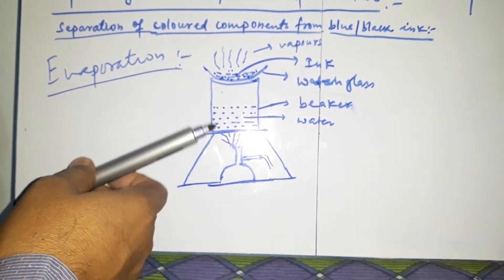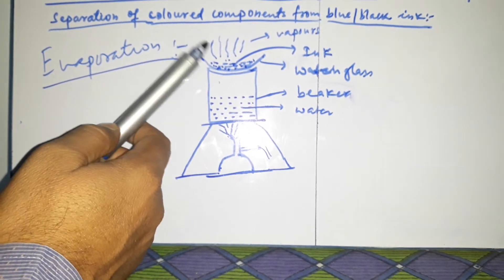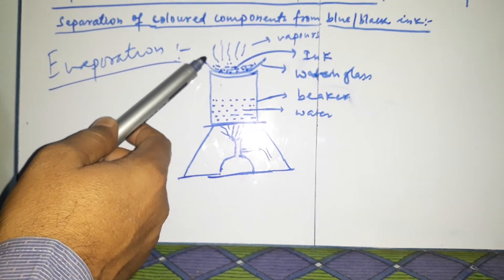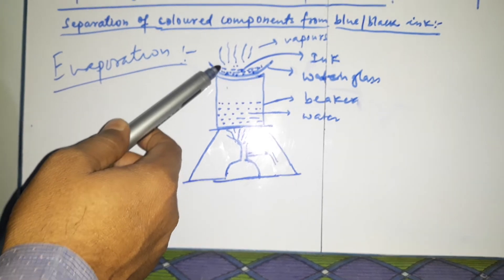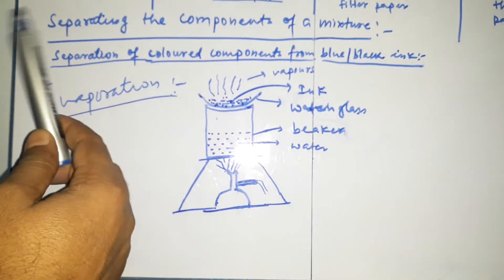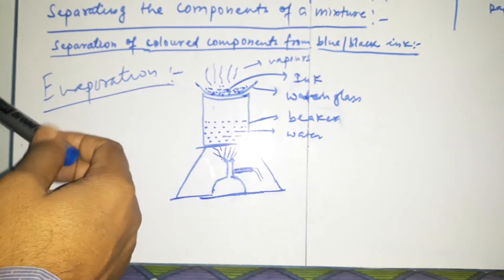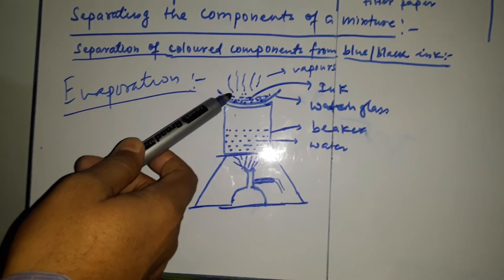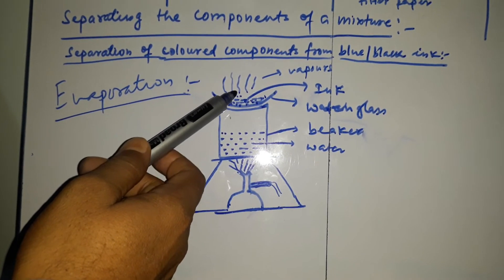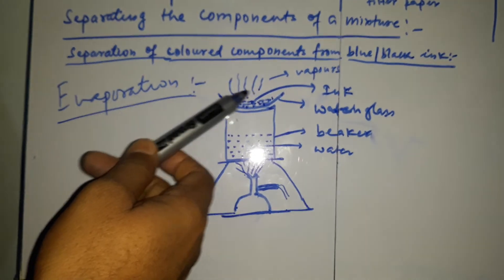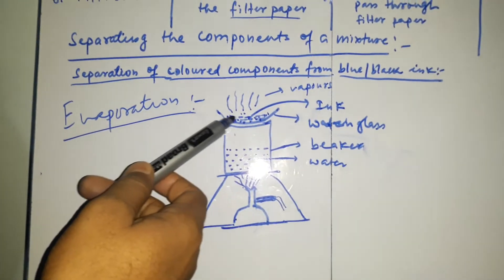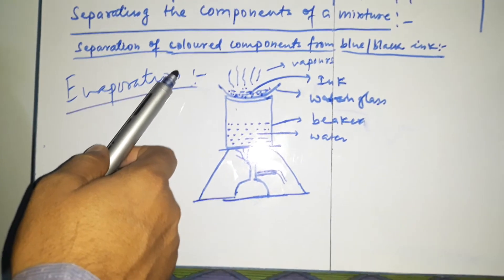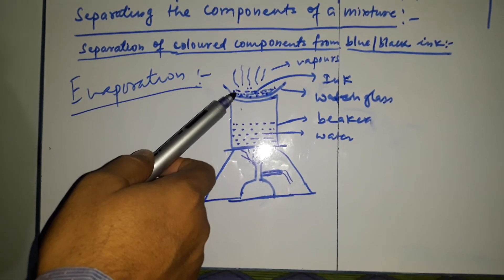We continue the heating, and after some time there will be no more vaporization — meaning the water present in this mixture is completely removed. Now we stop heating and observe that there is some blue or black dye — whatever ink we had taken — left remaining in the watch glass. By this method of evaporation, we have separated the water from the dye.